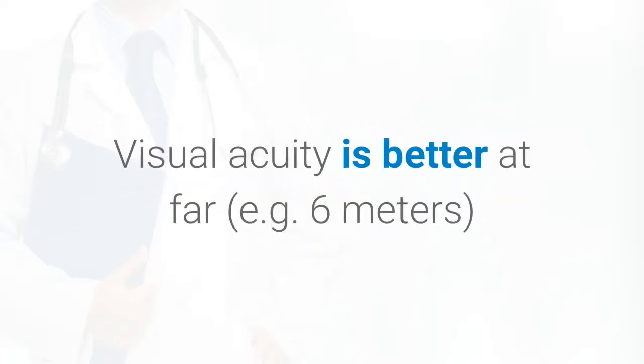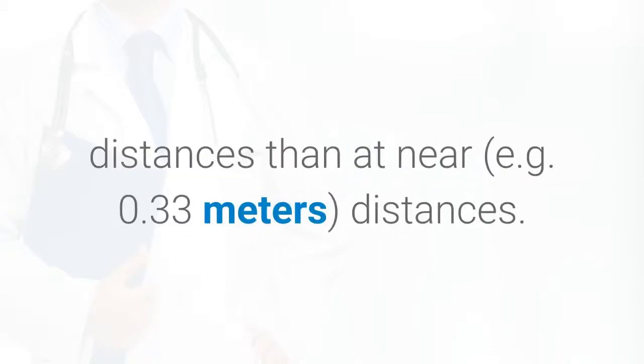Visual acuity is better at far, for example 6 meters distances, than at near, for example 0.33 meters distances.